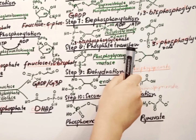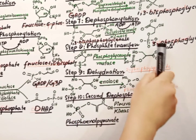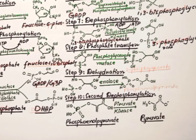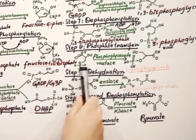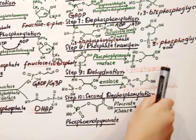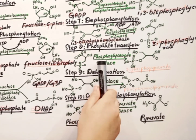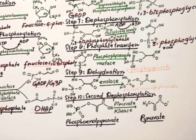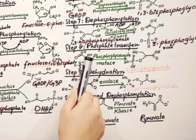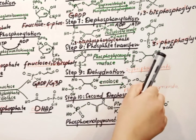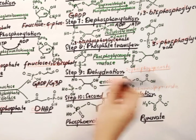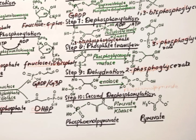In step 8, phosphate transference takes place. The 3-phosphoglycerate is converted into 2-phosphoglycerate with the help of phosphoglycerate mutase enzyme, involving the transference of a hydroxyl group.